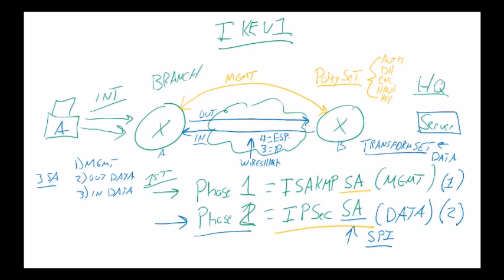Does ESP have port numbers? No, but it does have a security parameter index. All the packets that go out are going to have the same SPI. Let's say 39147. All the packets coming in are going to have a different SPI.